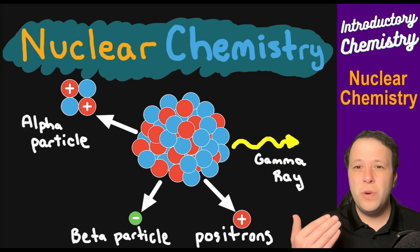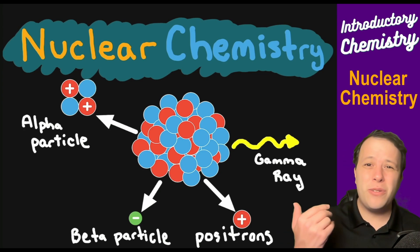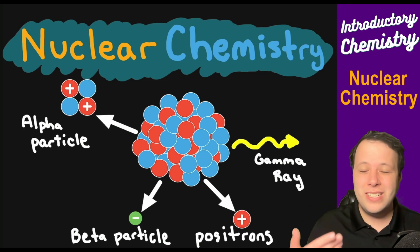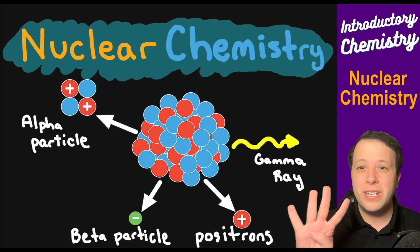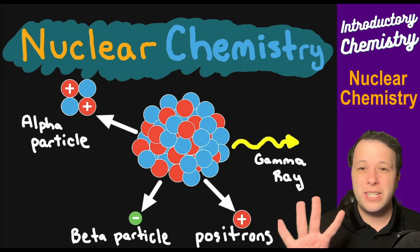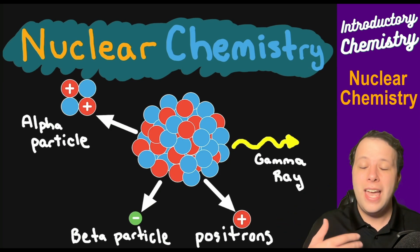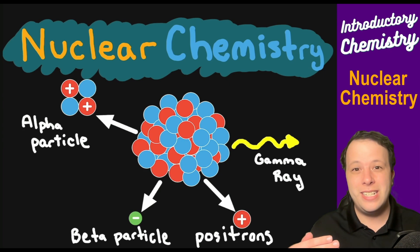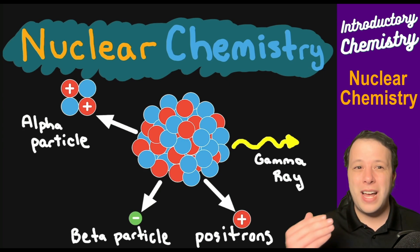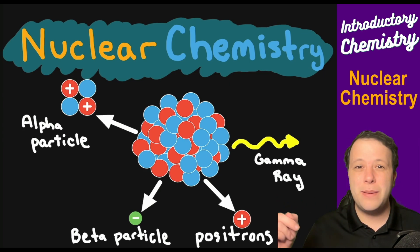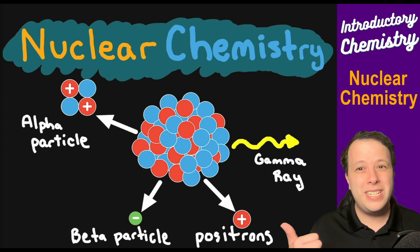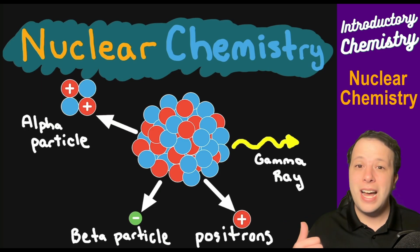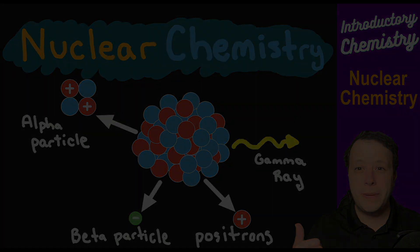We're going to go through the definitions, the four different types of particles that you're going to see, and the tips and tricks on how to balance these. Let's take a look at how these types of little unstable nuclei, like the one we see here, are going to break apart.